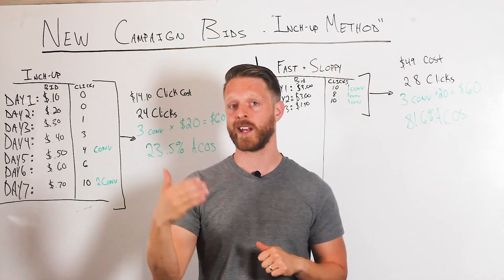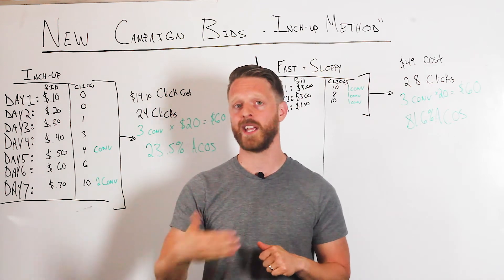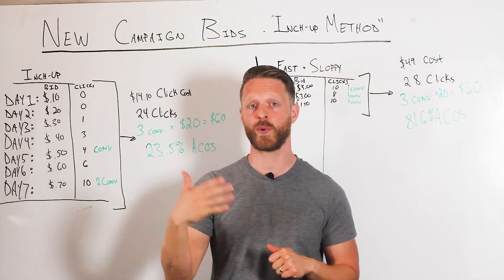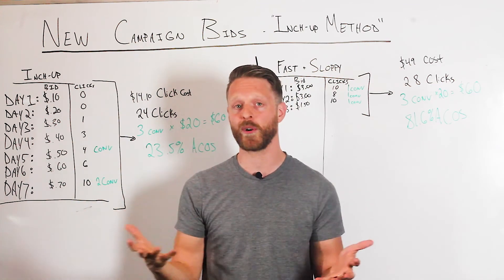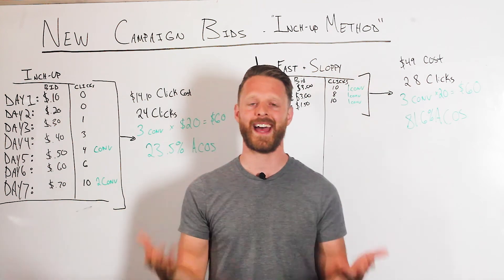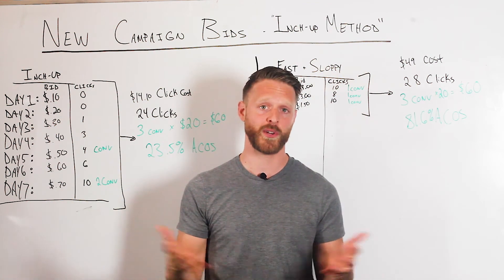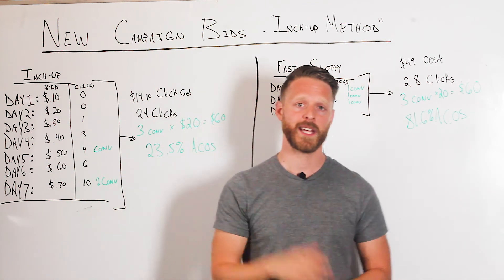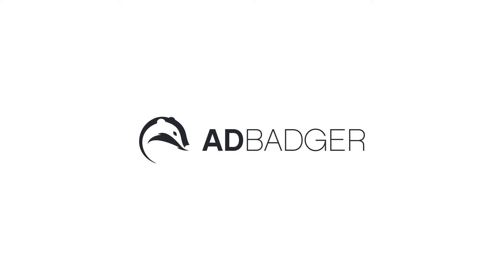What is your starting strategy when you launch your campaigns? If you've tried something like fast and sloppy or the inch up method for a new auto campaign or a manual new keyword, I'd love to hear what results you've had. This is Mike — talk to you soon!